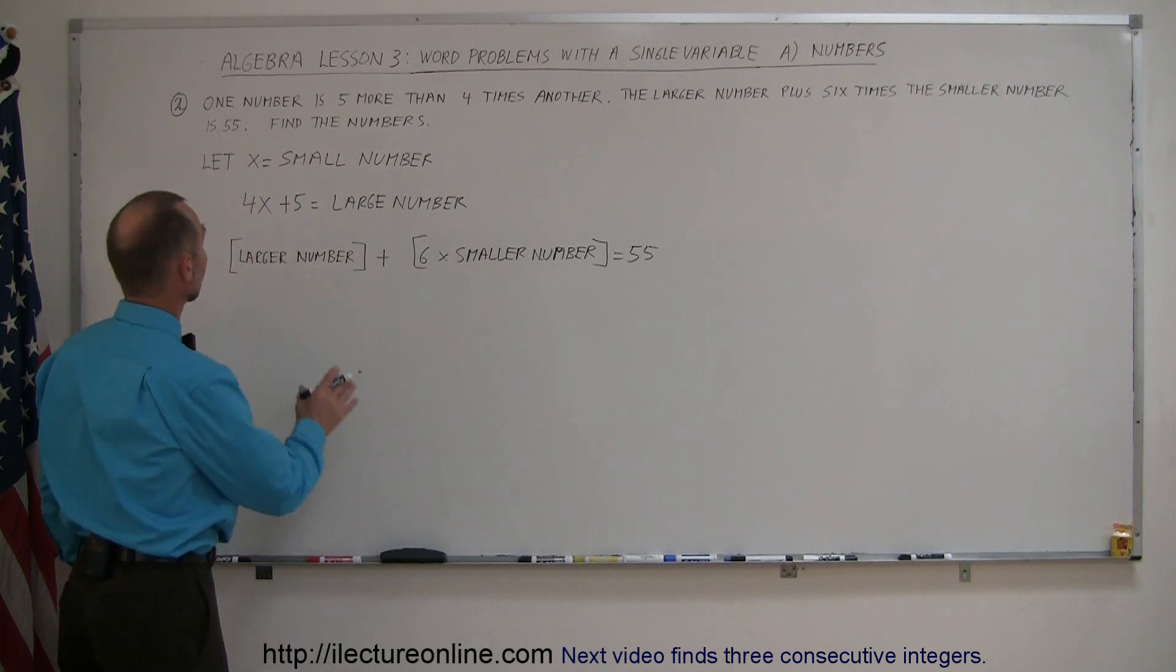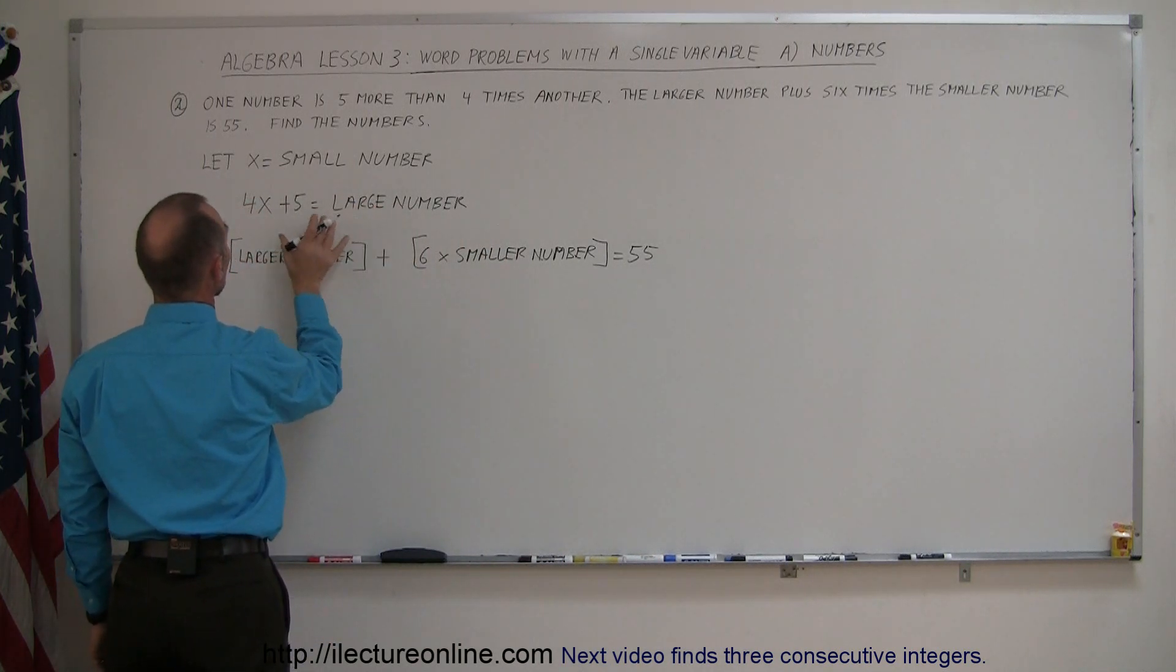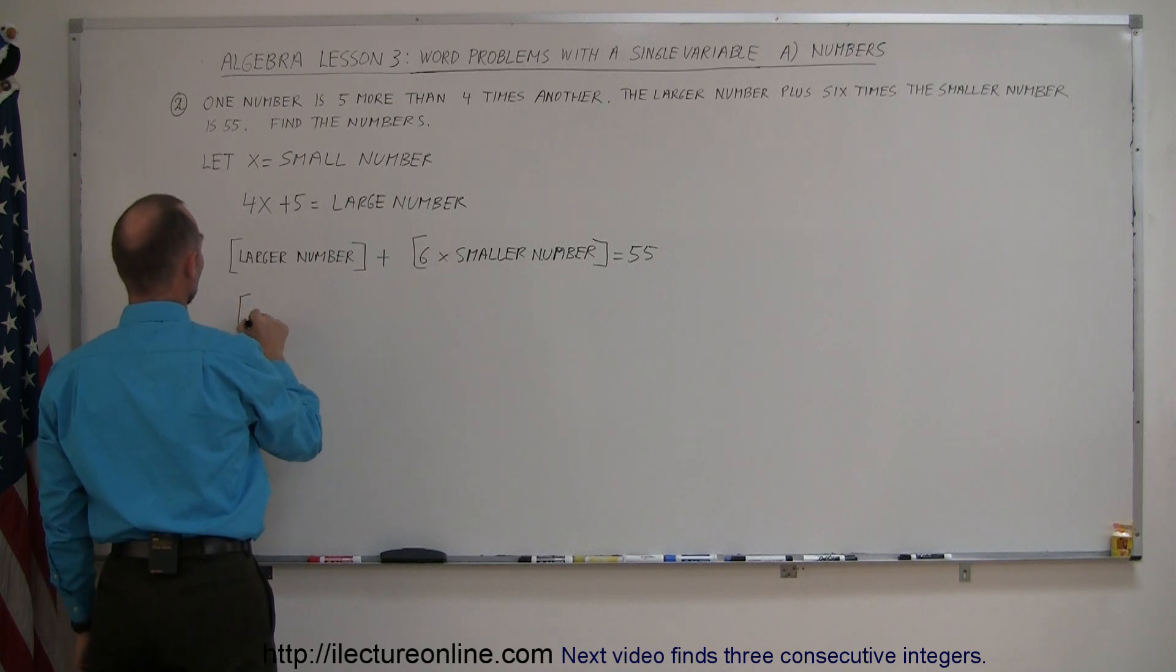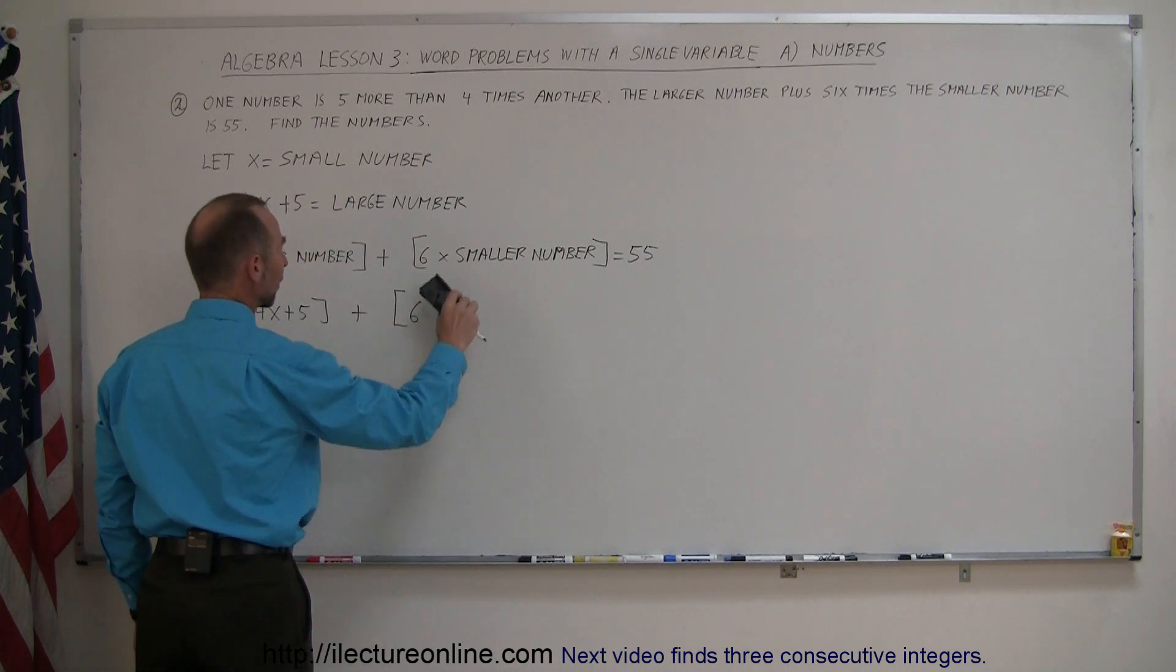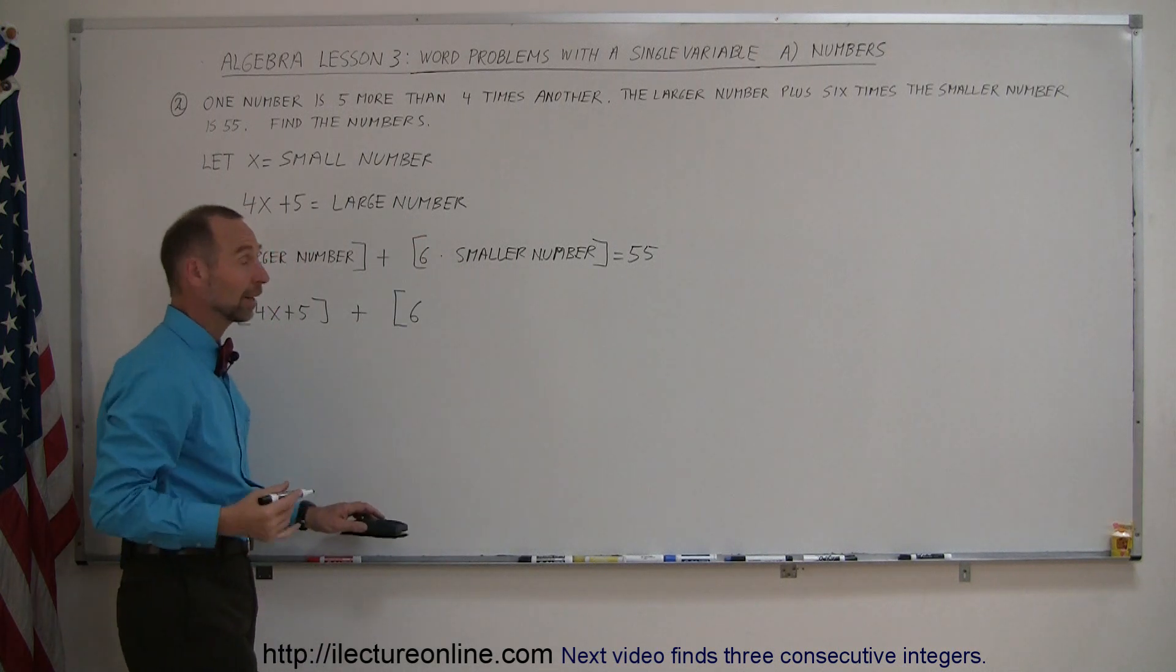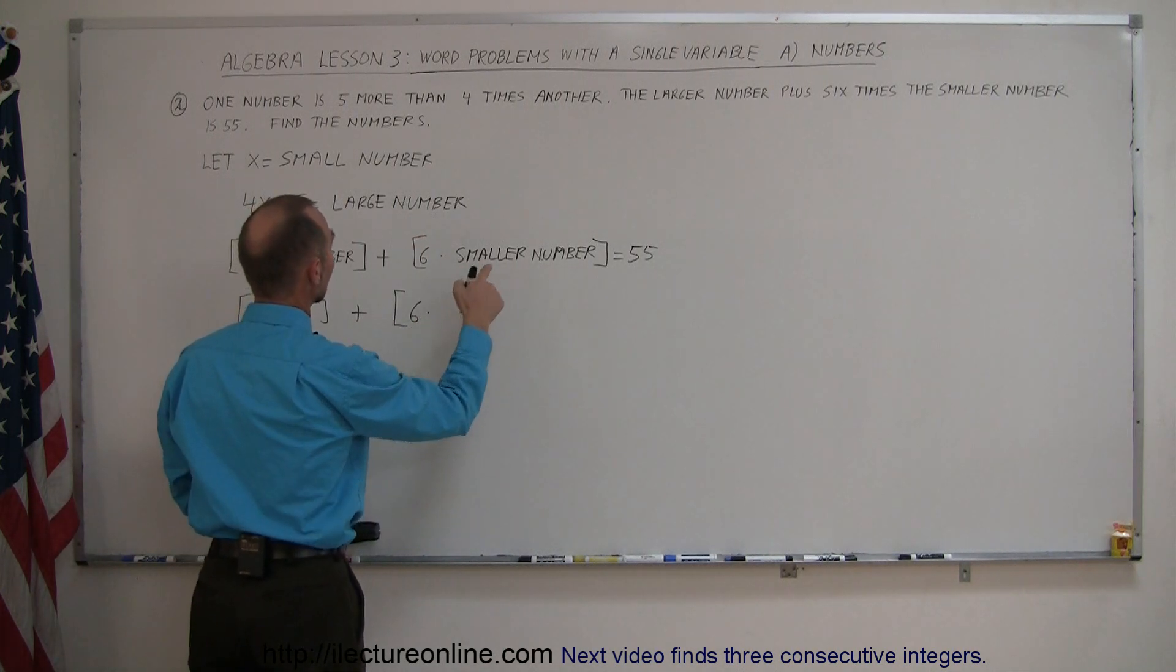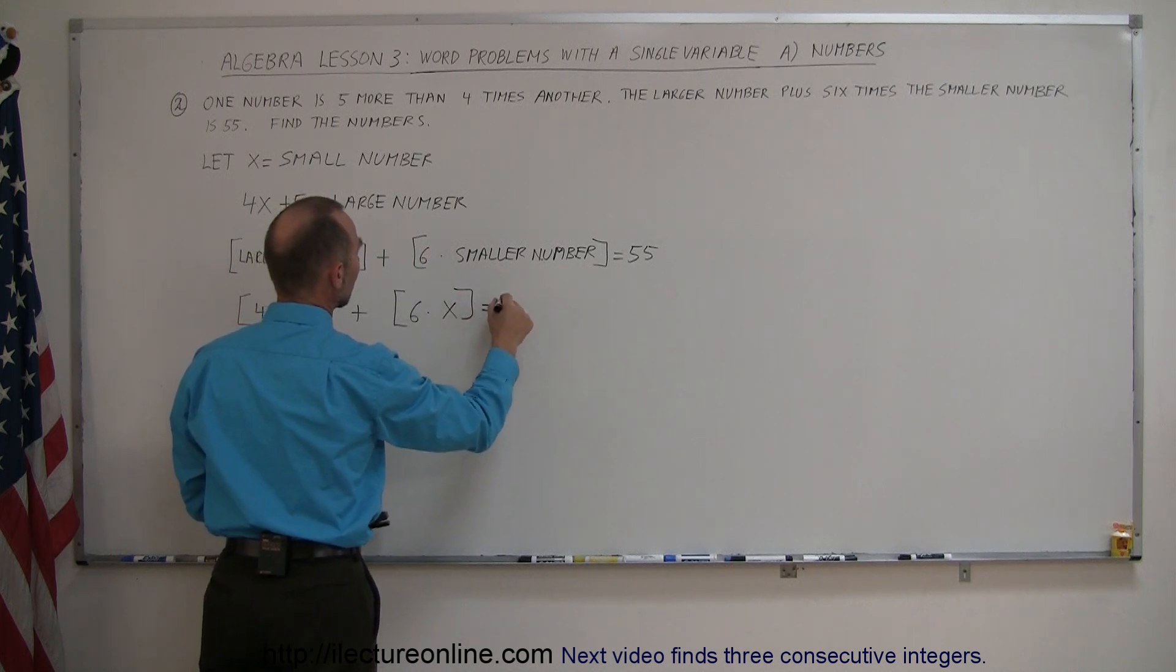Now, we define the smaller number by x, and we define the larger number by 4x plus 5. So we can say that 4x plus 5 plus six times the smaller number—this may confuse us a little bit, so let me just write a dot—six times the smaller number, which is x, and that should be equal to 55.